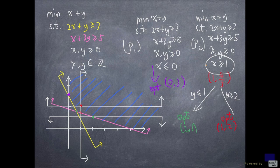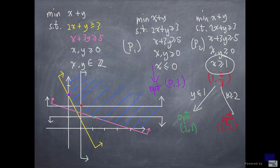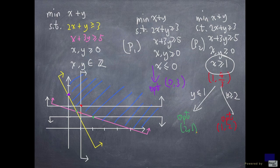Whereas P2, the optimal solution is 1 comma 4 over 3. And since y is still fractional, we apply the same idea again. We use that value to guide us into dividing P2 into two subproblems. And both subproblems turn out to have integer optimal solutions. And so we could stop.